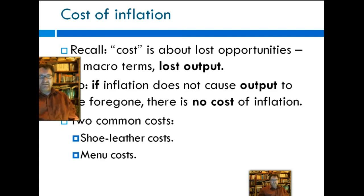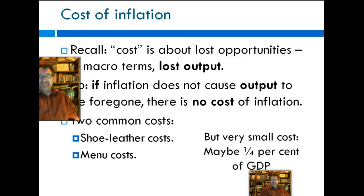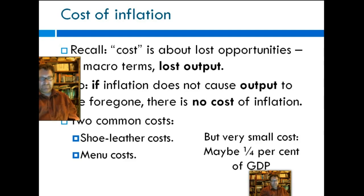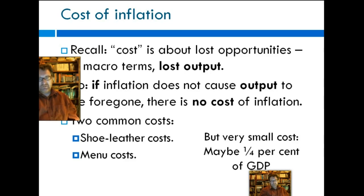The estimate from the United States — I don't know for Australia — is that these costs are reasonably small, generally estimated to be about a quarter of a percent of GDP. The idea would be that if you can get inflation to zero and thereby eliminate shoe leather and menu costs, then GDP would increase by a quarter of a percent, which is not really very much.